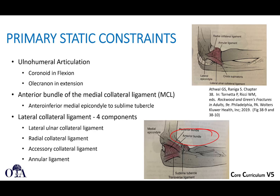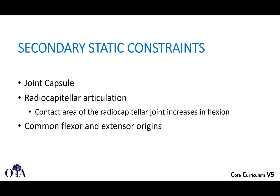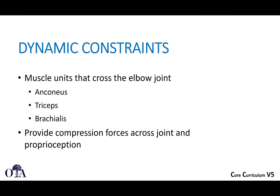We will return to the lateral collateral ligament complex when discussing posterolateral rotatory instability. The secondary static stabilizers are the joint capsule itself, the radial capitellar articulation, and the common flexor and extensor origins.